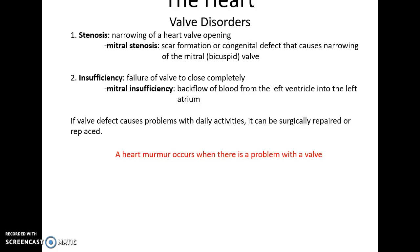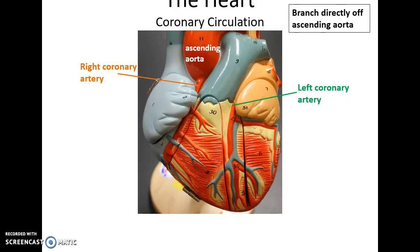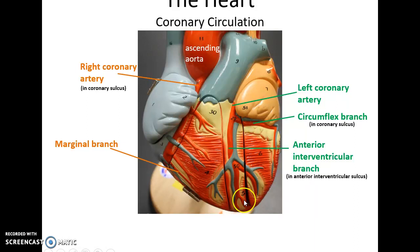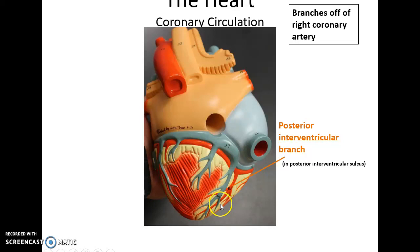Coronary circulation is the circulation that brings blood to the heart itself. The heart needs oxygen and nutrients, so the right and left coronary arteries come directly off the ascending aorta almost as soon as blood leaves the heart. From the left coronary artery, it splits into the anterior interventricular branch and the circumflex branch, carrying blood around to the left side of the heart. The right coronary artery splits into the marginal branch and the posterior interventricular branch, delivering oxygenated blood throughout the heart.